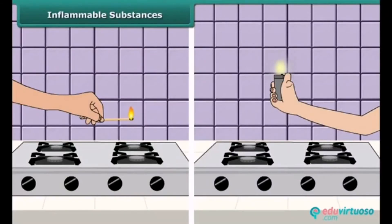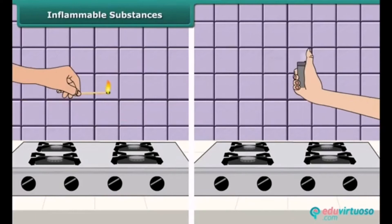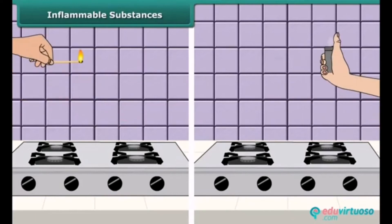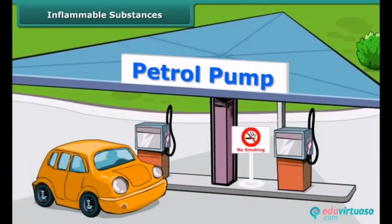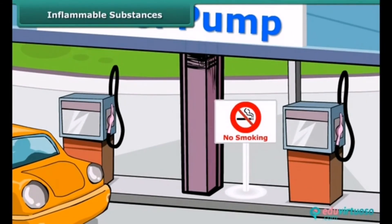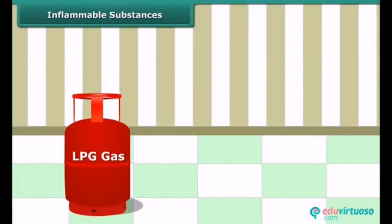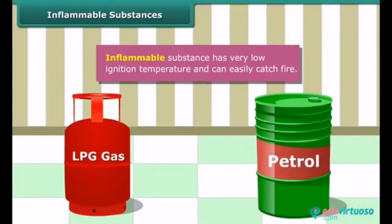Your mother would have told you to keep a burning matchstick or lighter away from the LPG gas stove in the kitchen, because LPG catches fire very easily. Similarly, you must have seen 'No Smoking' sign boards at petrol pumps, because petrol also catches fire very easily. Substances like LPG and petrol are inflammable because they have a low ignition temperature, due to which they readily catch fire.